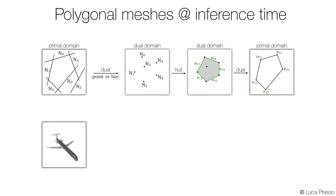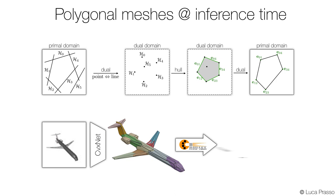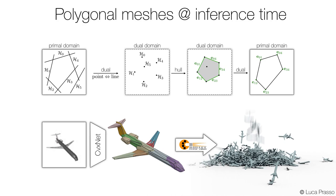This means that our network can take an image as input and generate a model that is directly usable in traditional graphics pipelines. As an example, here we show a real-time rigid body simulation.